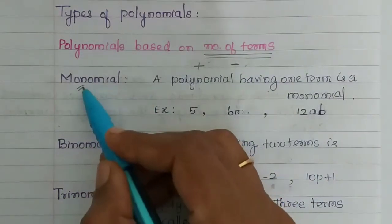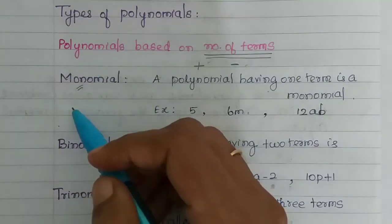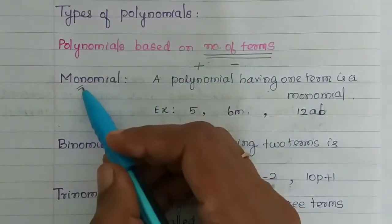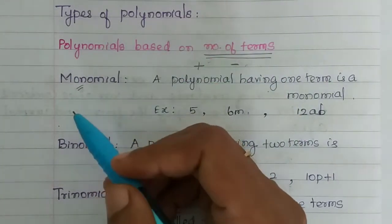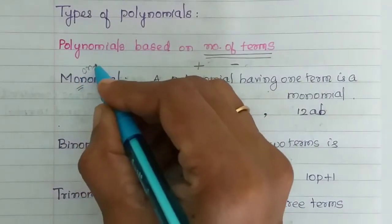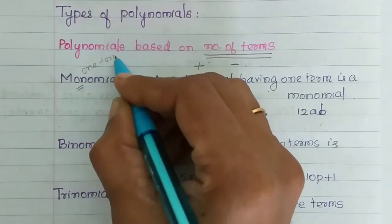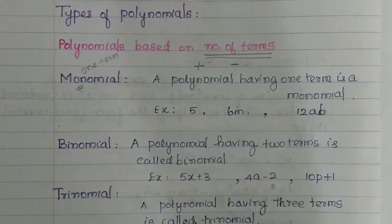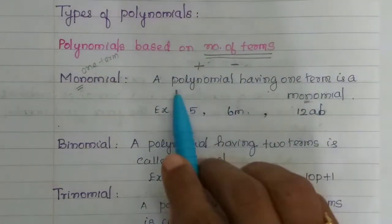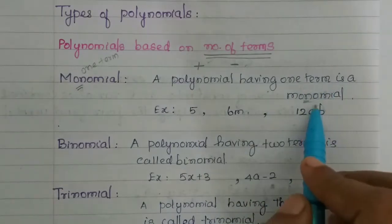First, monomial. 'Mono' means one. So, mono is one — that's one term. A polynomial having one term is a monomial.